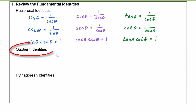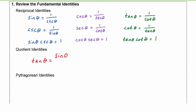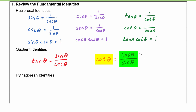Next up we have the quotient identities. We know that tangent of theta is equal to the quotient of sine theta over cosine theta. And cotangent theta is equal to cosine theta divided by sine theta. So again we can make those substitutions — anywhere I see a cotangent theta, I could write instead cosine theta over sine theta, or vice versa.